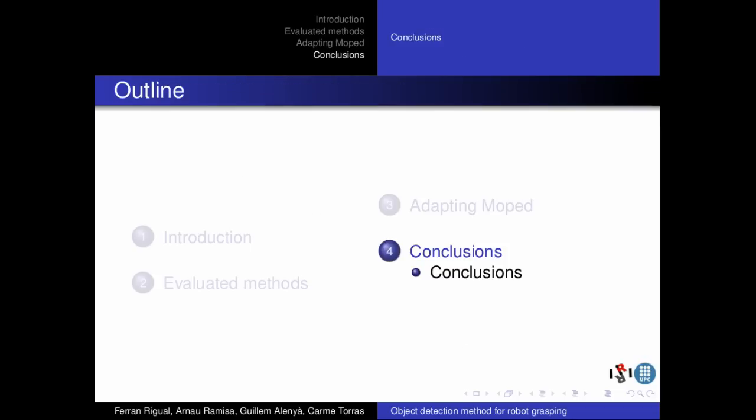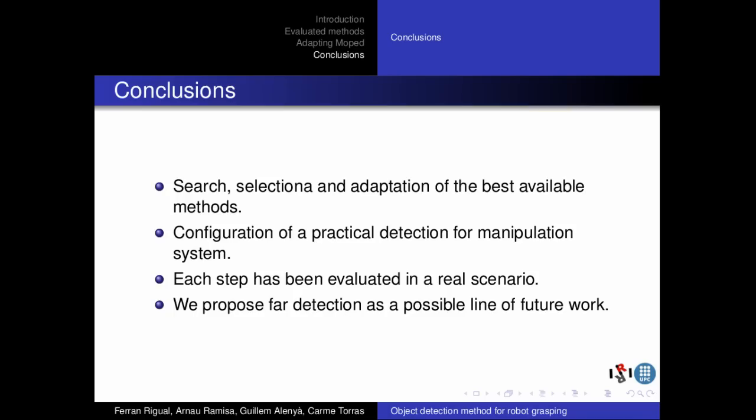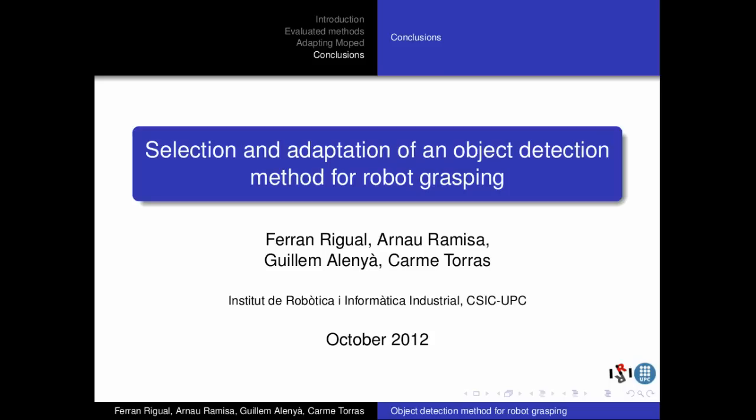Finally, the conclusions. A search of the best available methods has been performed. The method that best solves our particular problem has been selected and adapted. A configuration of a practical detection for manipulation system has been arranged. Each step, from the training process to the grasp of the objects, has been evaluated in a real scenario. Our results are inversely proportional to the distance at which the detected objects are located. Therefore, far detection is proposed as a possible line of future work. This is the end of the presentation. Thanks for your attention.